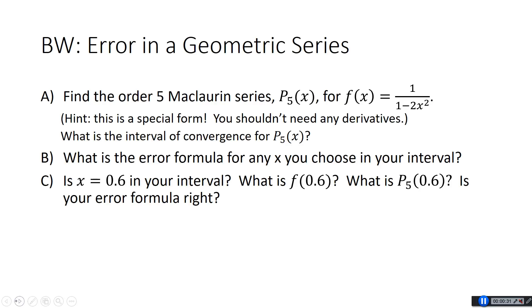We're going to start with what you learned in the last section, which is error in a geometric series. So hopefully you have this at least a little bit under control now. First we're going to find the order 5 Maclaurin series p5(x) for f(x) = 1/(1 - 2x²). Then we're going to find the error for any x you choose in the interval, and then we're going to see if 0.6 is in the interval and compare it to the error formula. This is a special form — one trap that calculus students fall into is they see the word Maclaurin and they start taking derivatives, doing first derivative, second derivative.